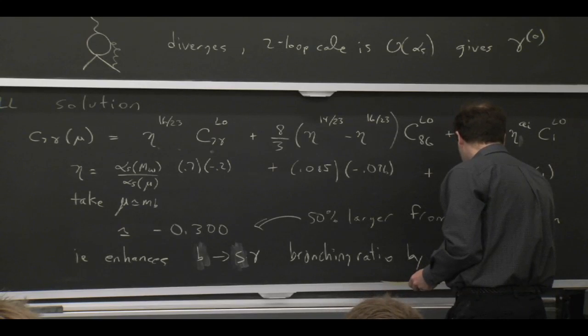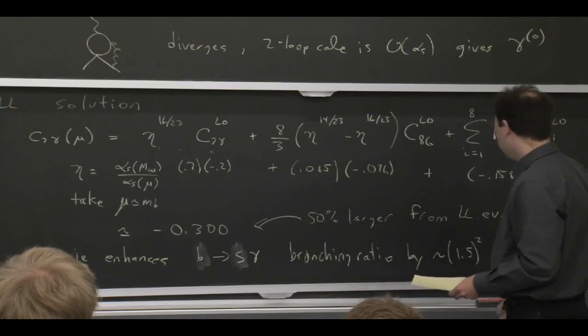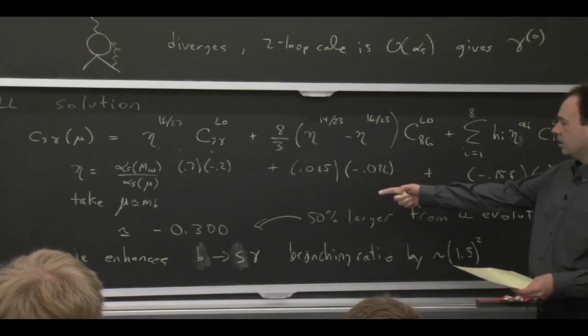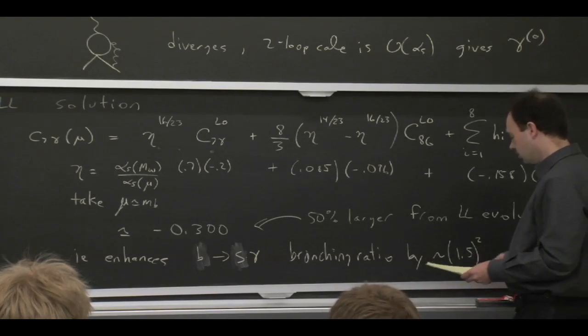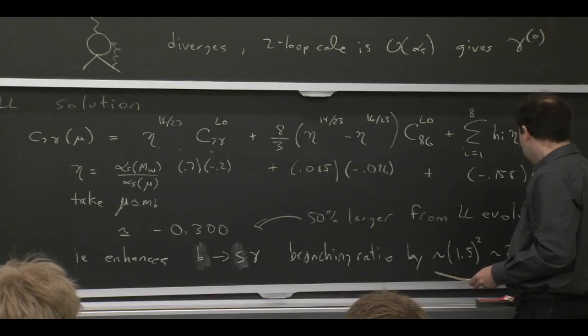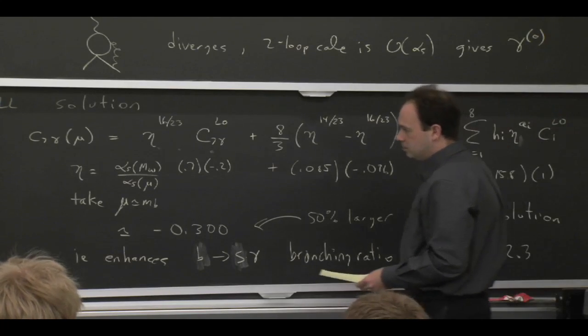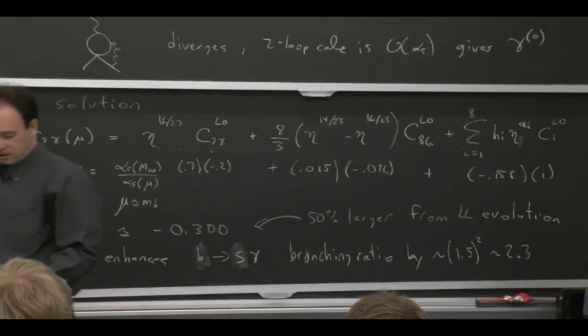And it's even worse when you put it in the branching ratio, because a 50% enhancement in a coupling, when you put it in the branching ratio, you're squaring the amplitude. So that's a factor of 2.3. So these are really crucial corrections to take into account.